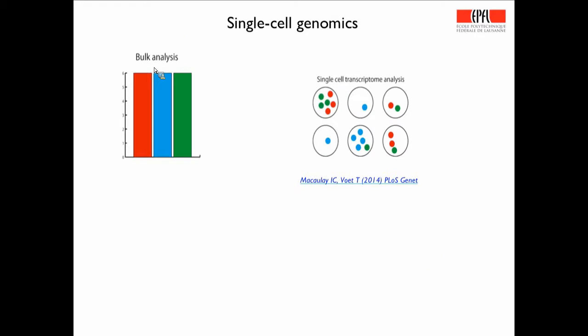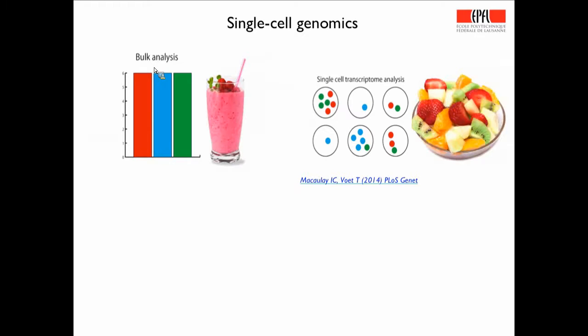This is nicely illustrated by a simple cartoon: bars represent bulk analysis, but gene blue is only expressed in three cells and not others — the bulk analysis will not reveal this. Bulk RNA sequencing has been compared to trying to dissect a smoothie, whereas what you really want to know is the actual fruit in the smoothie. Each sample in bulk transcriptomics is an average, and we have no idea of the underlying values in single cells or of the tissue heterogeneity.